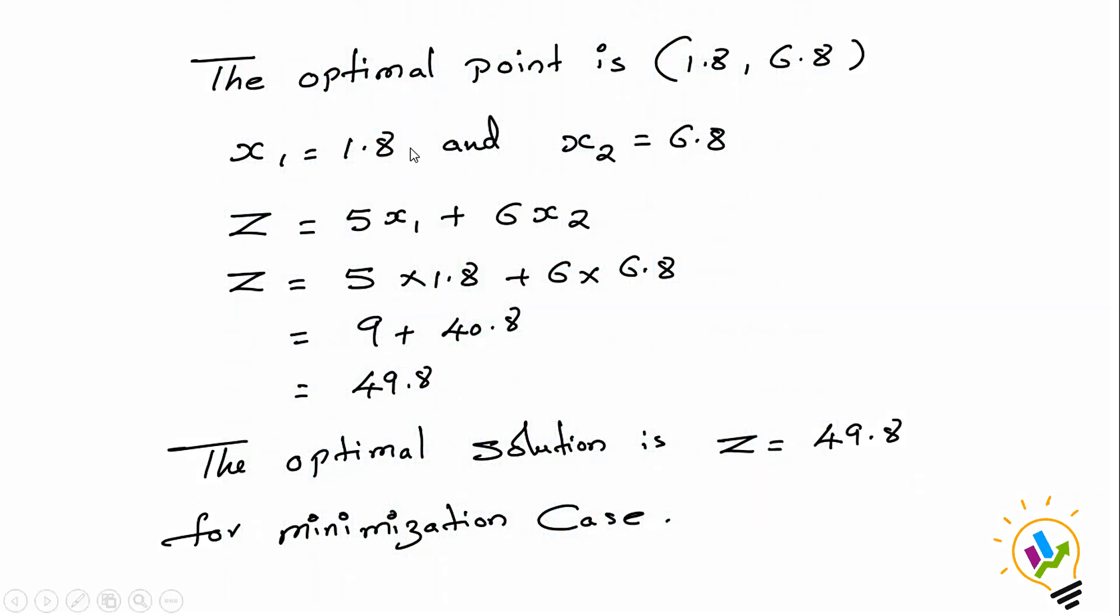x1 is 1.8 and x2 is 6.8. Substituting in the Z value: Z = 5(1.8) + 6(6.8) = 9 + 40.8 = 49.8. So the optimal solution is Z equals 49.8 for the minimization case.